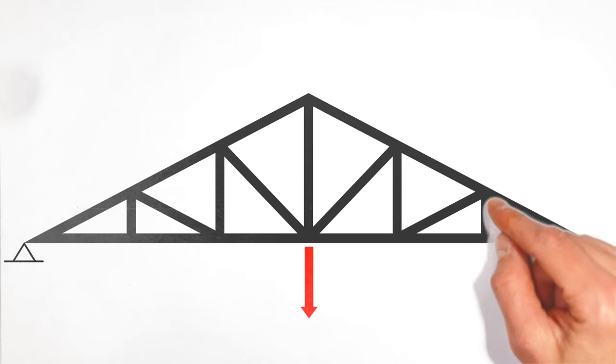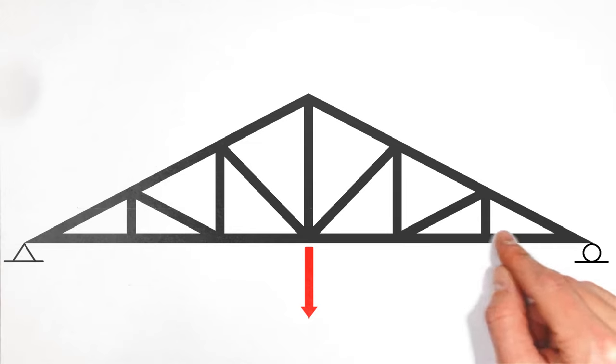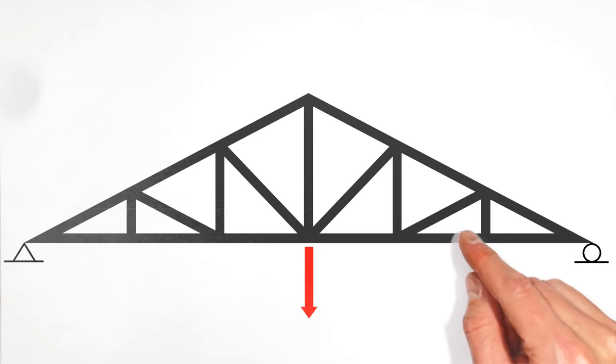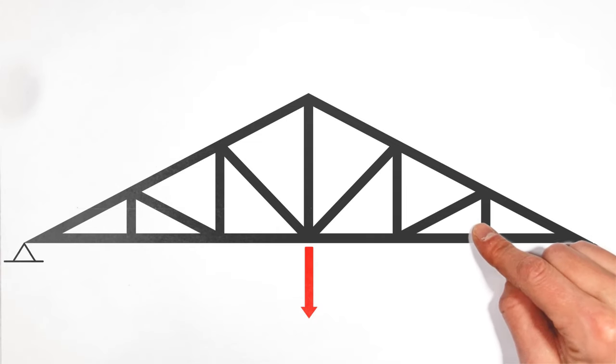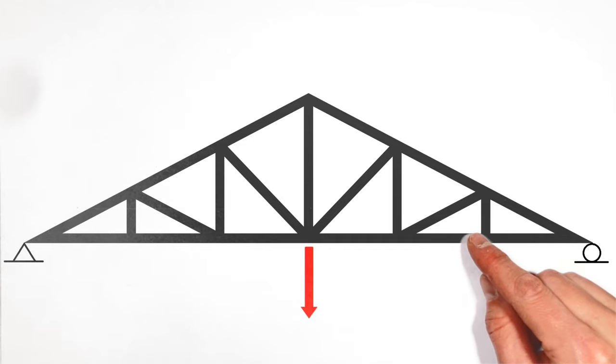This member right here comes straight down and intersects these other two that are in line with each other. Now, there's no way for this vertical beam to have any load in it without creating a net force on this joint right here, meaning it has to be a zero-load member.